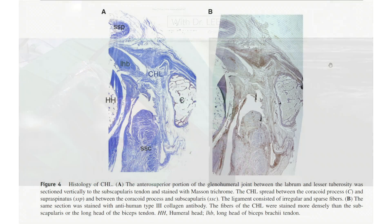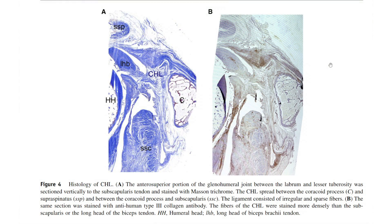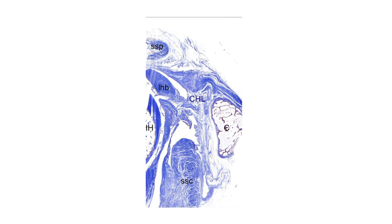This is the histology of the coracohumeral ligament of a specimen comparable to sagittal section A, showing the long head biceps tendon and the coracohumeral ligament. The ligament consists of irregular and sparse fibers. It is not a typical true ligamentous structure.